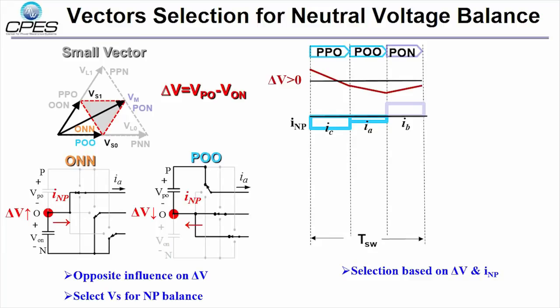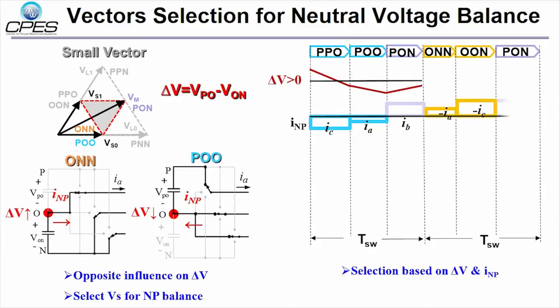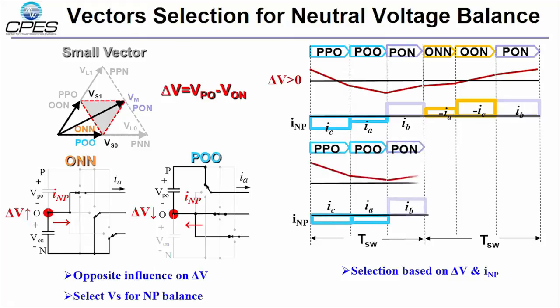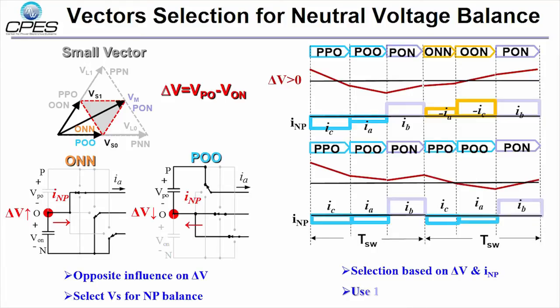If NP voltage is positive, the small vectors are selected to reduce delta V, and then the NP imbalance is negative. Another small vector is used to increase delta V. Conversely, if delta V is still larger than 0 after one cycle, the same small vectors are used in the next cycles so that NP voltage is balanced.